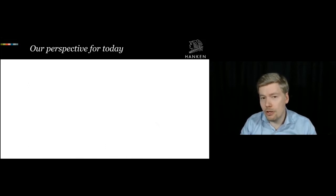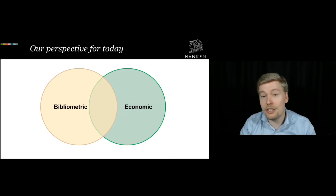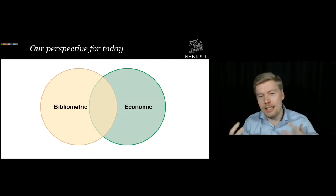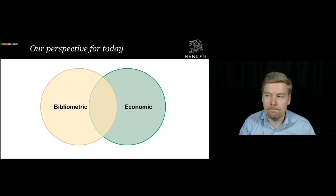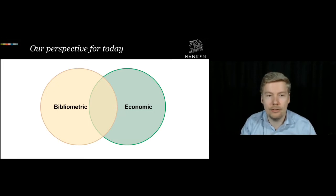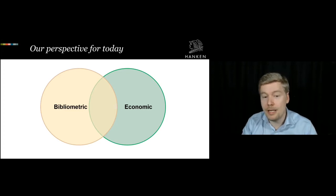I'd like us to put on a pair of glasses for today. One lens is thinking about bibliometrics — how researchers and libraries think about publication channels. But we also need a second lens: the pure economics of what it takes to run and maintain services. We can't just think about minimizing and maximizing different costs to run services — we are in an existing environment where we need to take different things into account. We can't just talk pure money or pure information science; we need a bit of both.